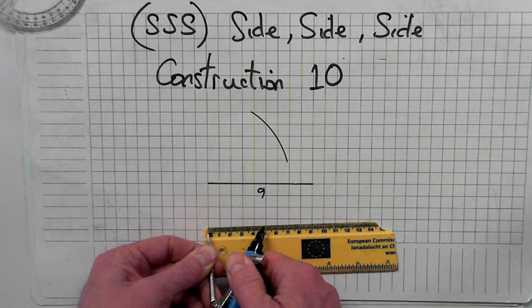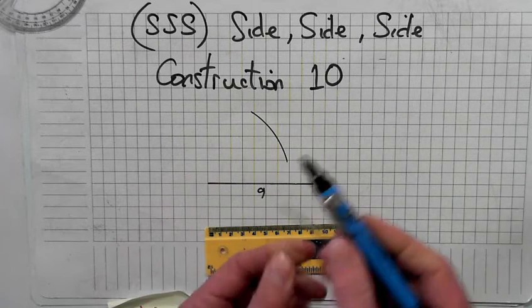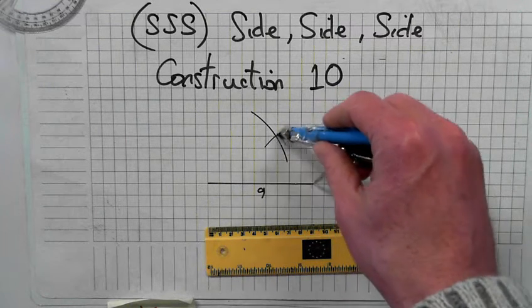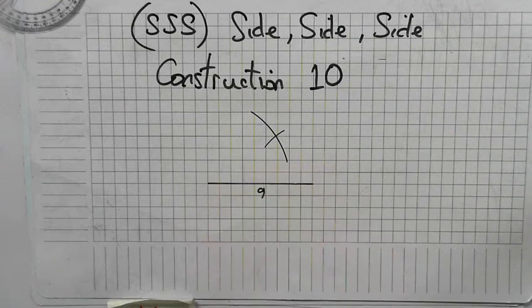And then mark the third side, which is the length of five. Go to the other corner. Mark it off. Where the lines intersect.